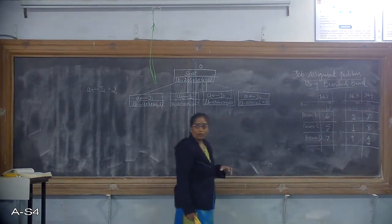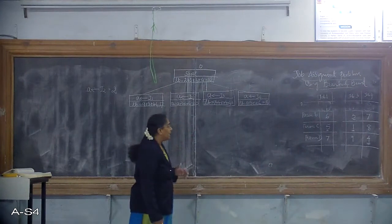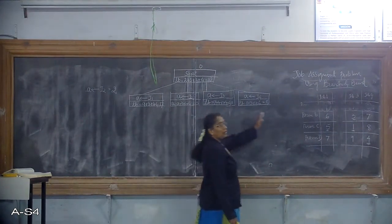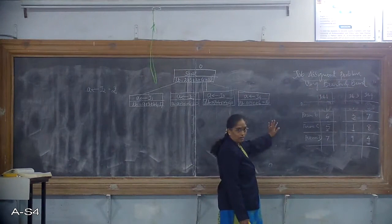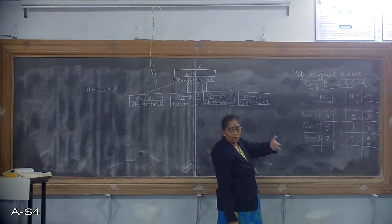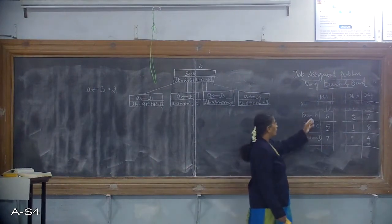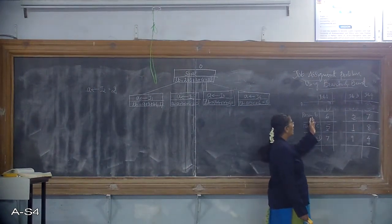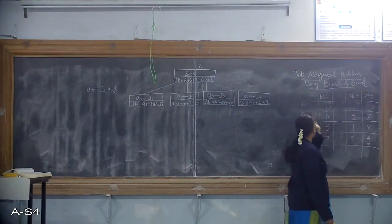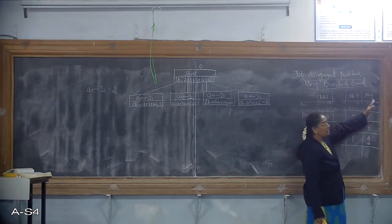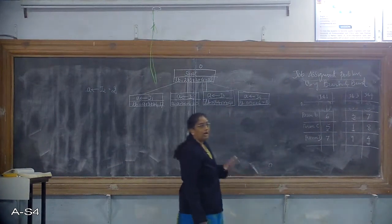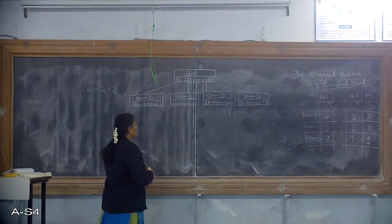For the next level, we explore nodes for person B. For person A there were 4 options available, but for person B now only 3 options are available: you can assign job J1, job J3, or job J4 to person B. So we write 3 nodes for person B.